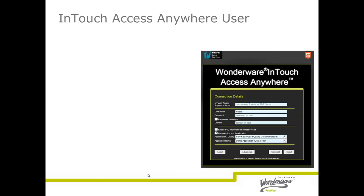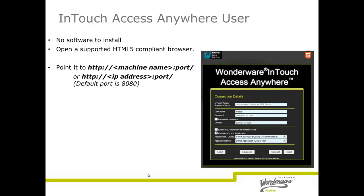On the user side, Access Anywhere is easy to deploy, again because there's no software for the user to install, only the use of an HTML5 browser. When users launch their browsers, they'll enter the web address of the configured server. This is generally the machine name, colon the port, or the IP address. Here's a couple of examples.